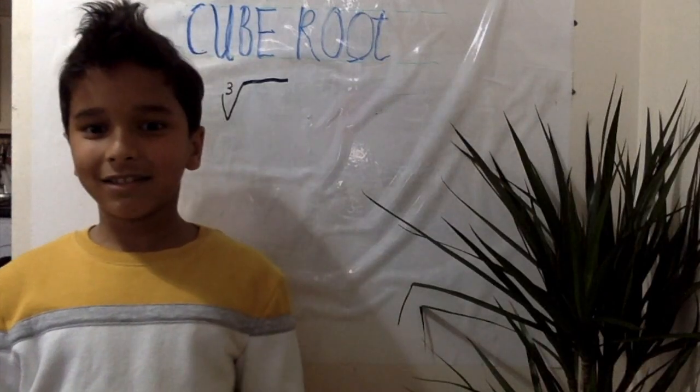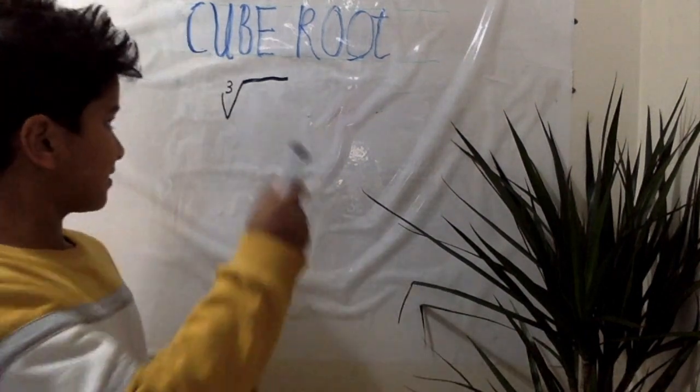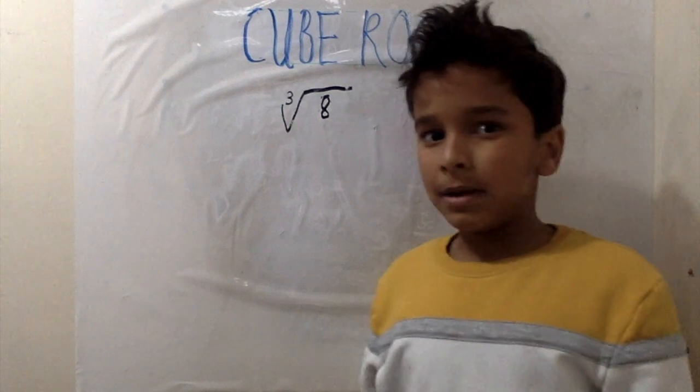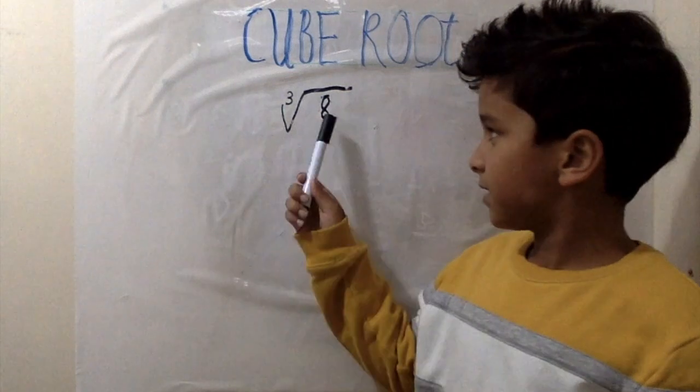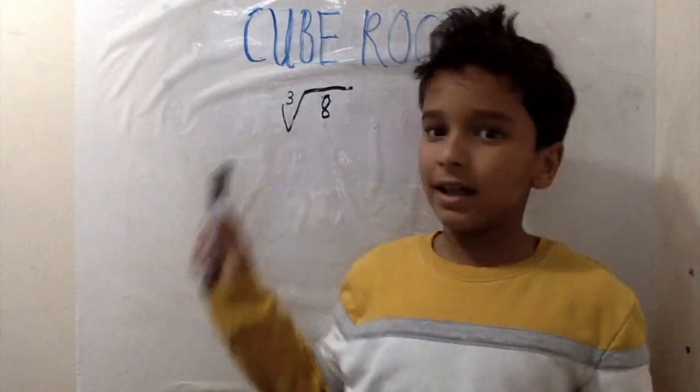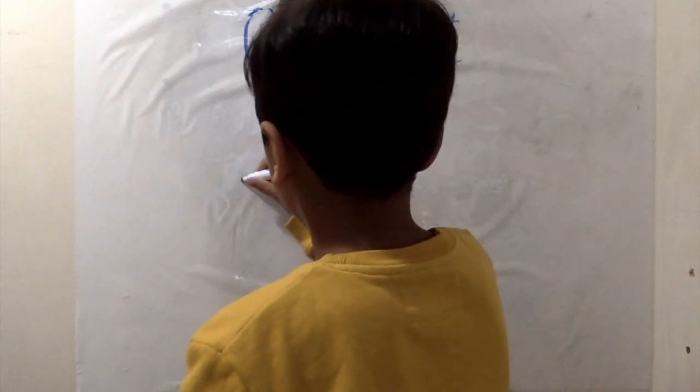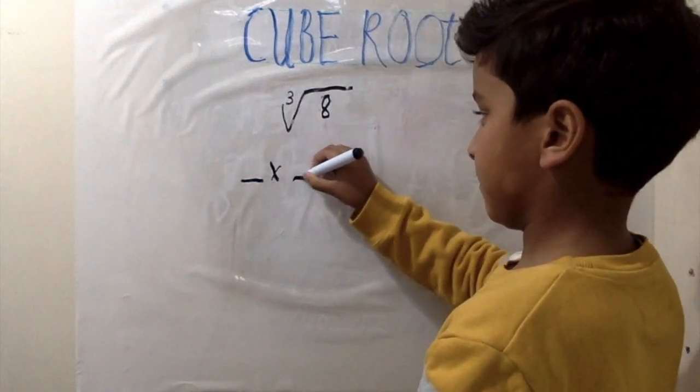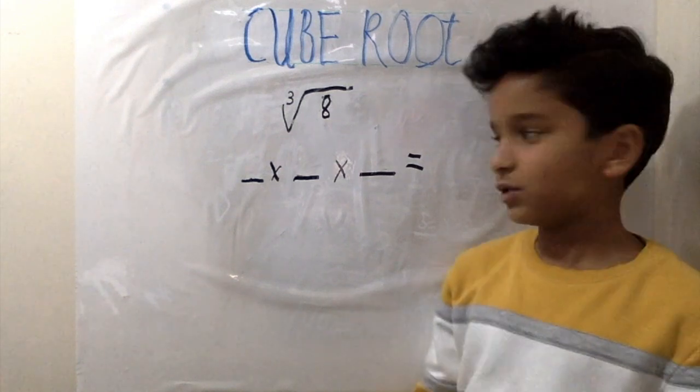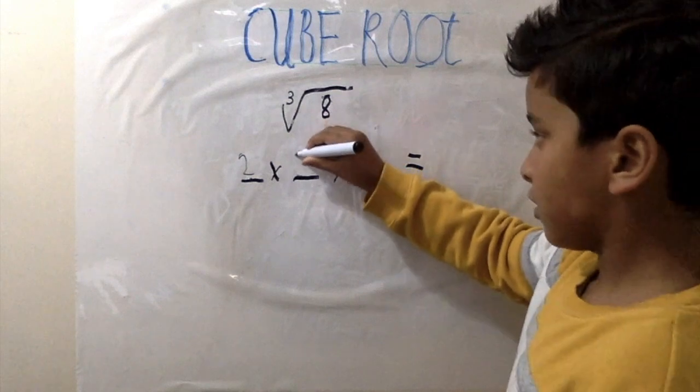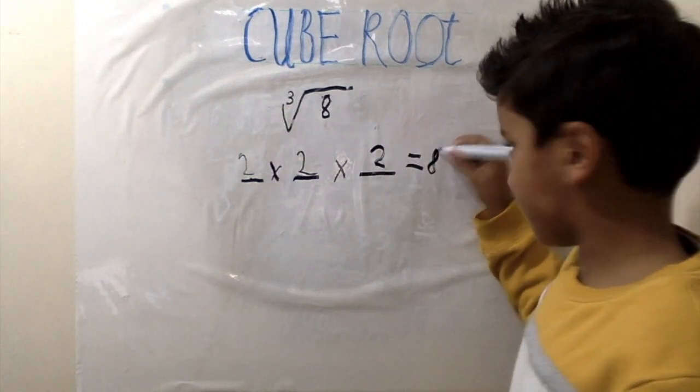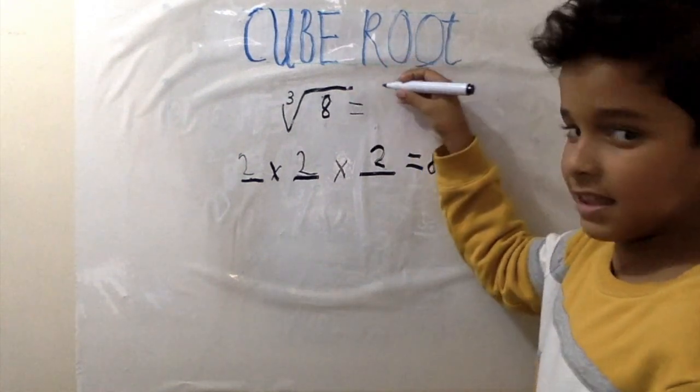So let's take a look at the cube root of 8. The little 3 here tells you that a root number multiplied by itself 3 times equals 8. So we need to find that root number. What number multiplied by itself 3 times equals 8? The answer is 2. 2 times 2 equals 4, times 2 equals 8. So cube root of 8 equals 2.